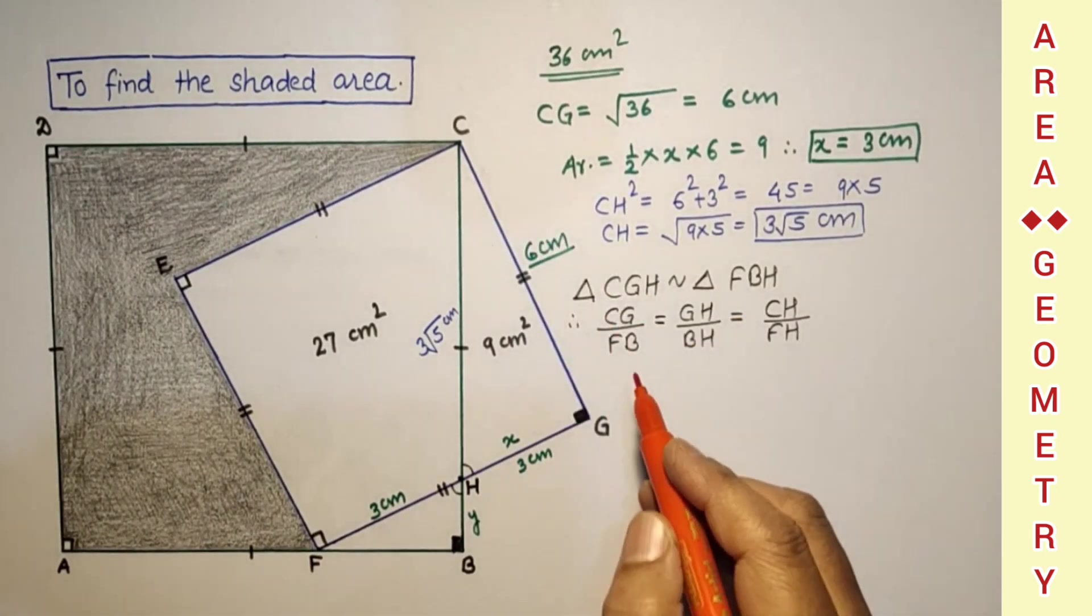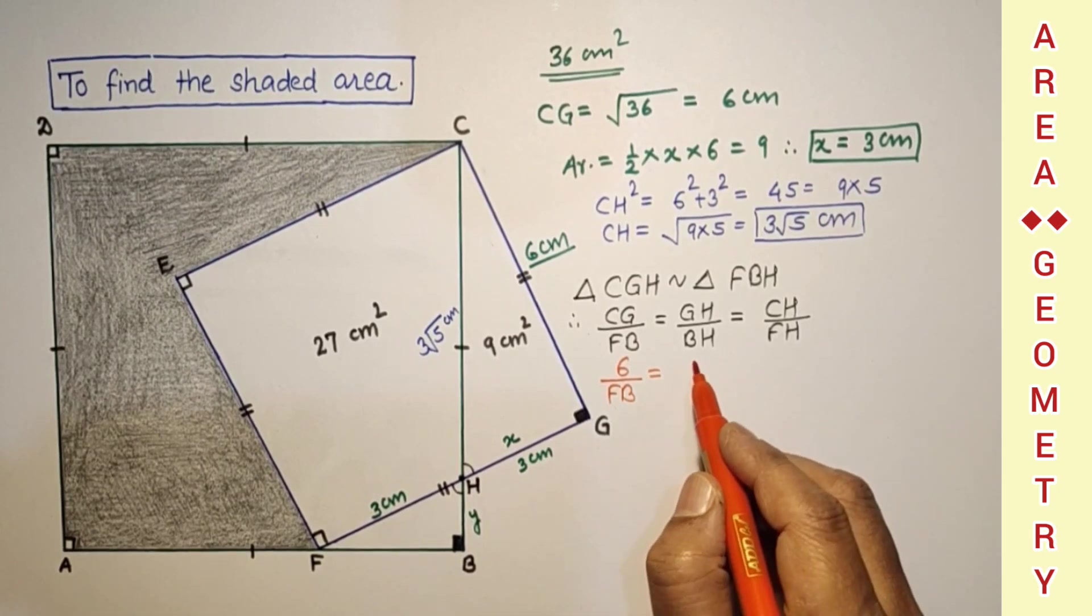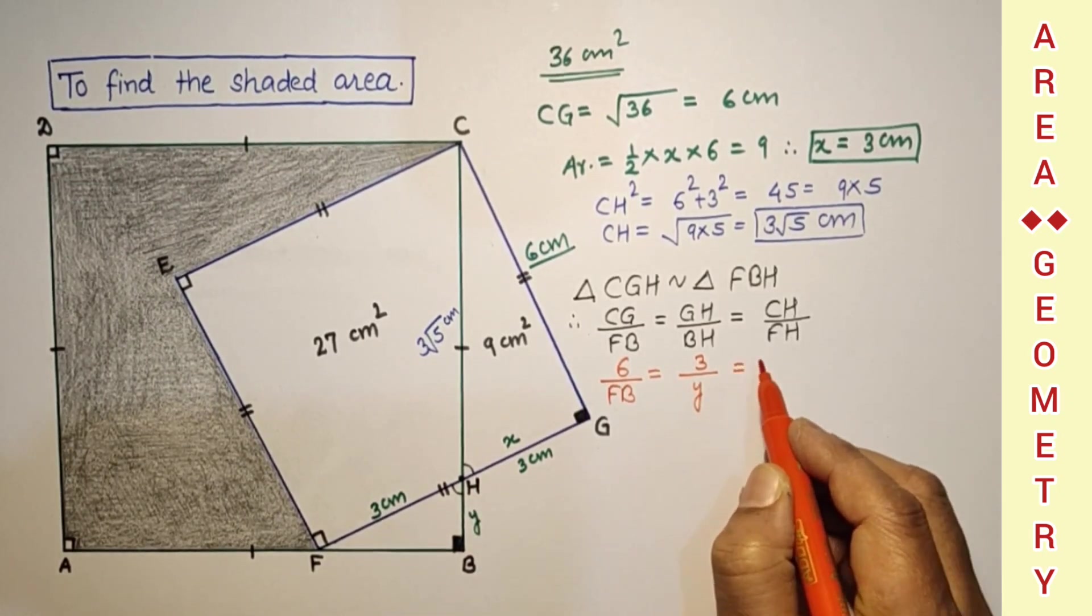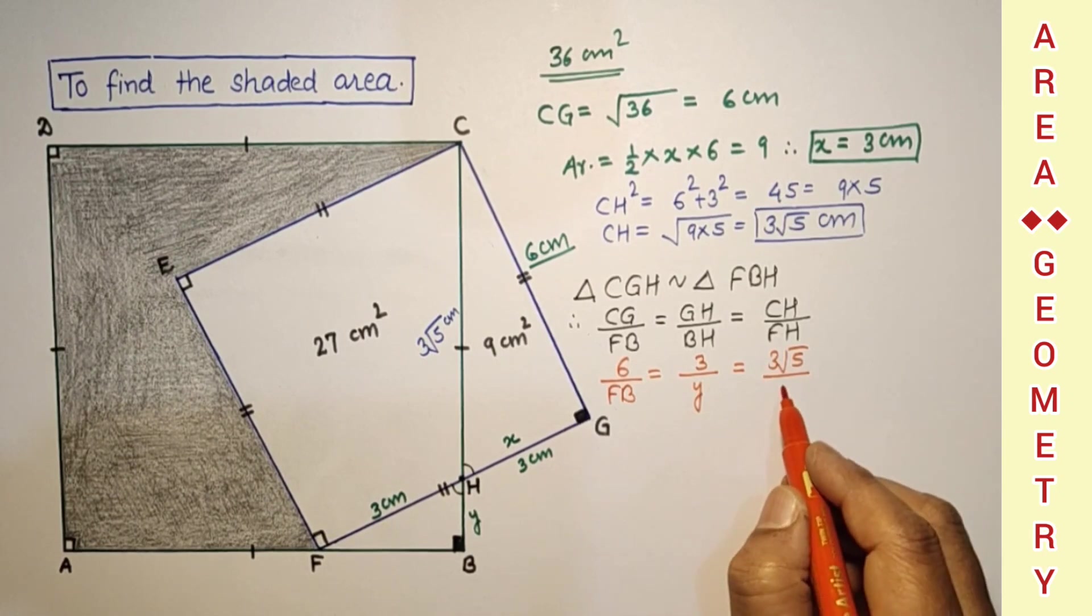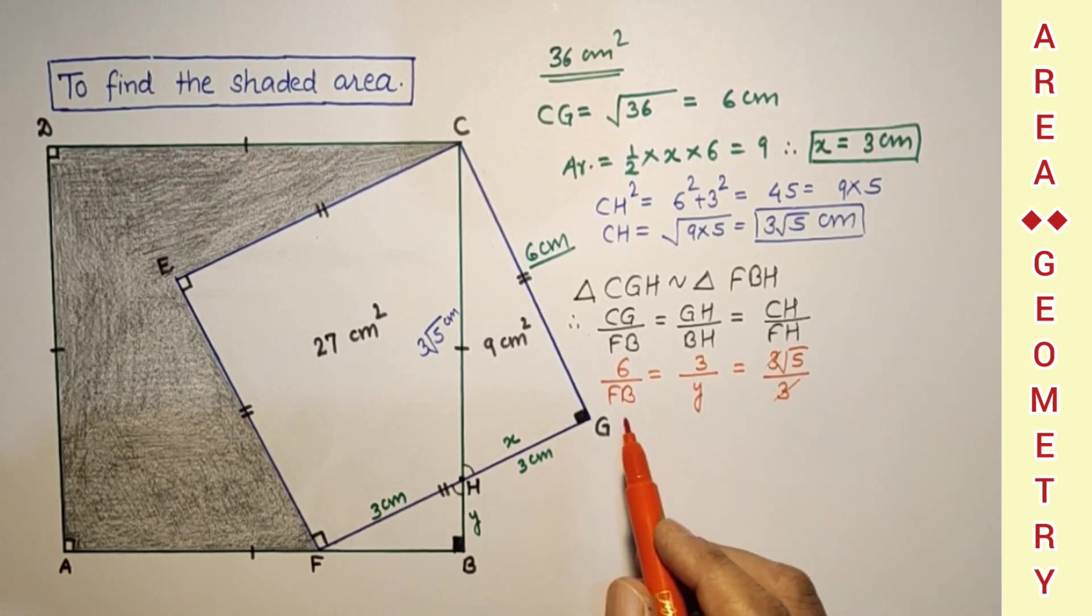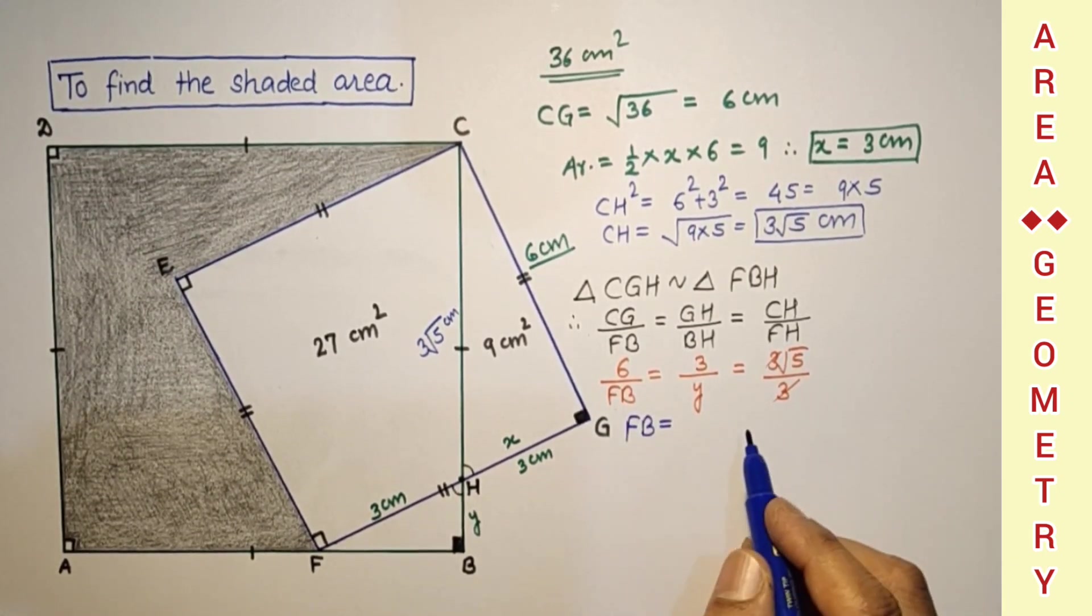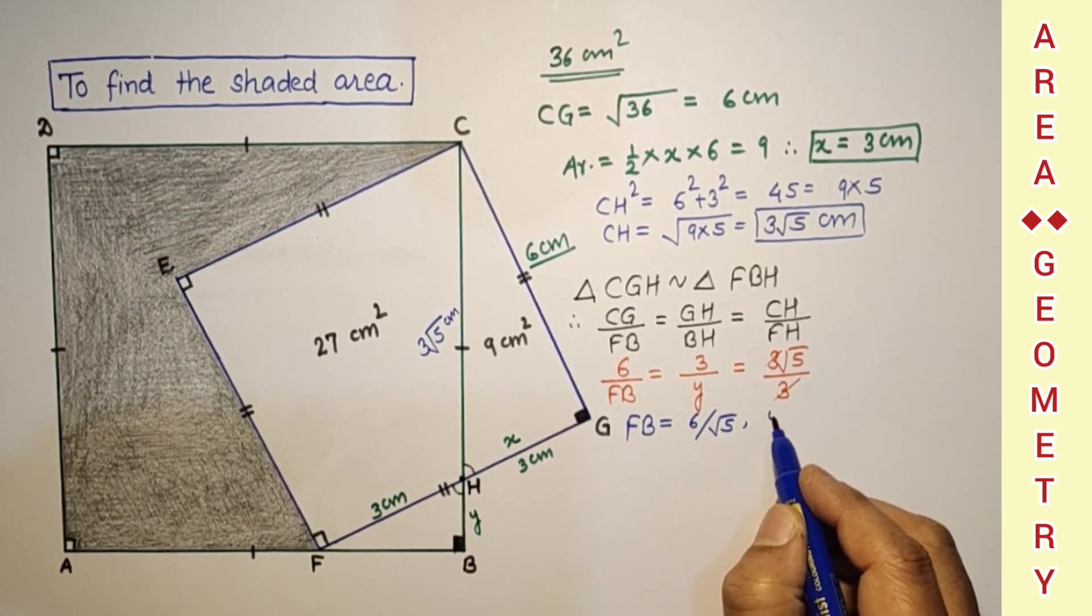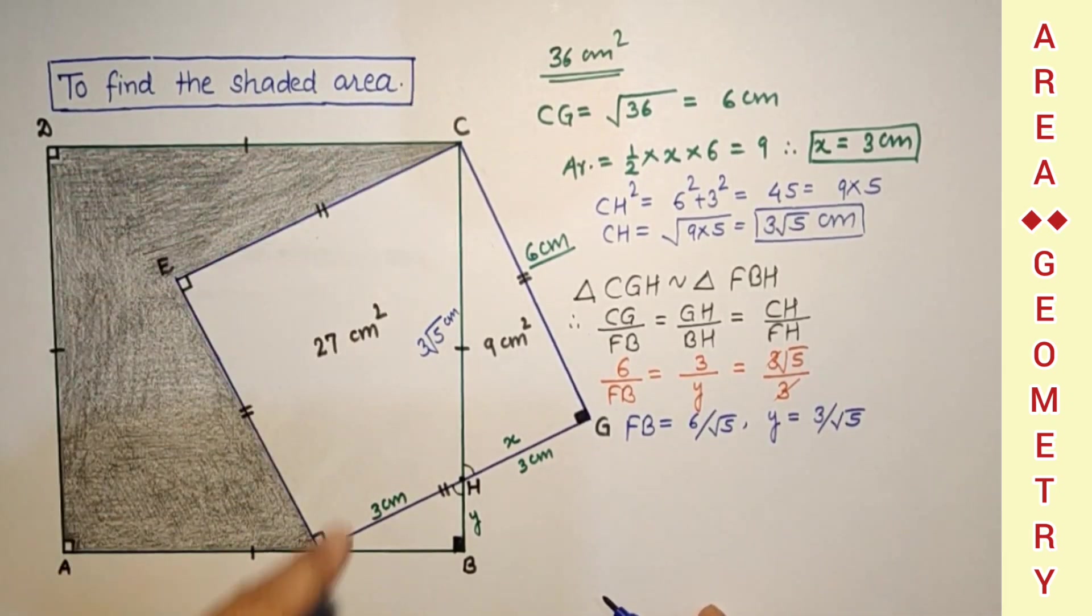Substituting the known values: CG is 6 over FB, FB is unknown. GH we found over BH, Y or HB. CH we found 3 root 5 and FH is 3. If we simplify this, 3 and 3 will get cut. FB is 6 by root 5. FB is equal to 6 by root 5, and this Y means BH is 3 by root 5.